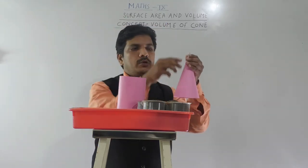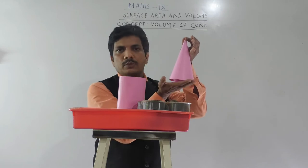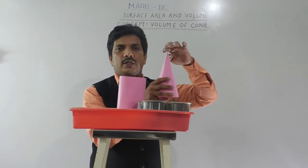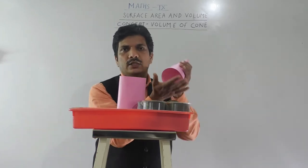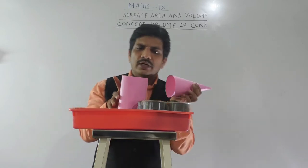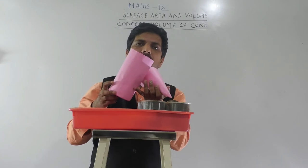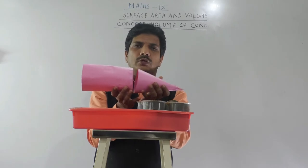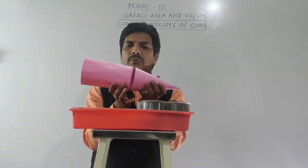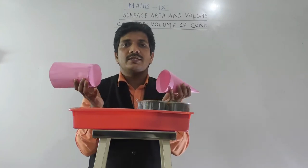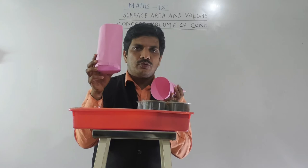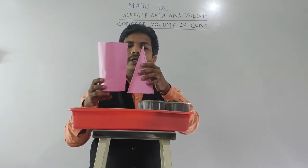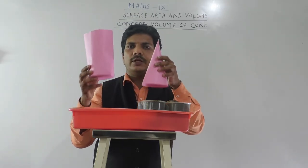Why is it called a right circular cone? Because the vertical height is perpendicular to the base, it is open at the base, and the top is the vertex. This is the slant height, vertical height, and this is the base. One similarity between the cylinder and the cone: the circumference of both the right circular cone and the right circular cylinder is the same, which means the radius is the same. The radius and height of both are equal.